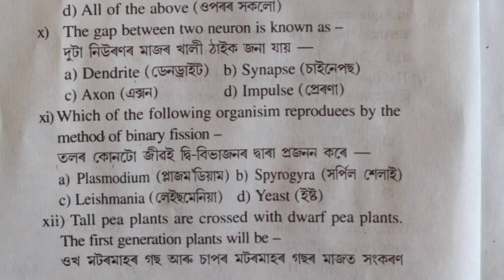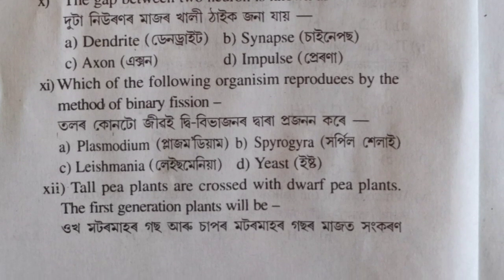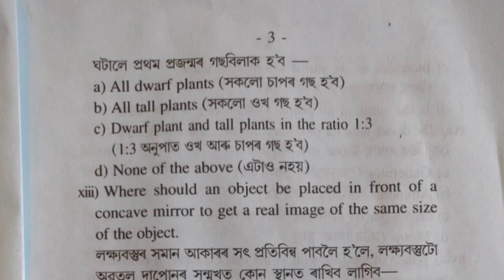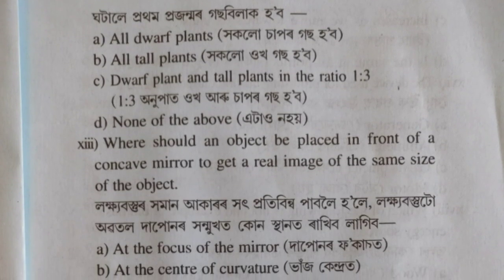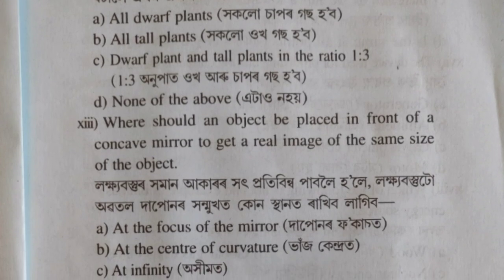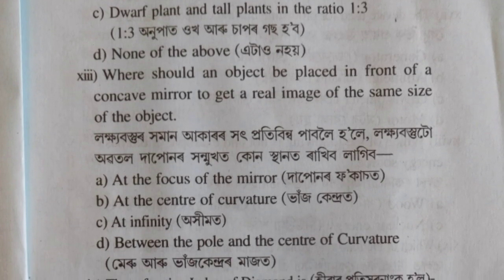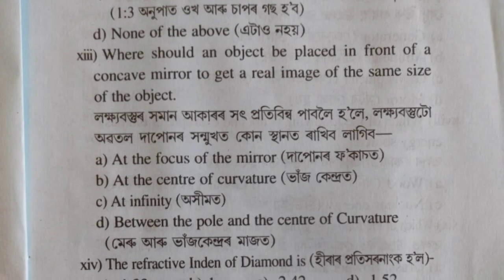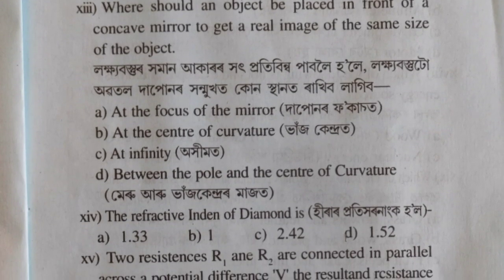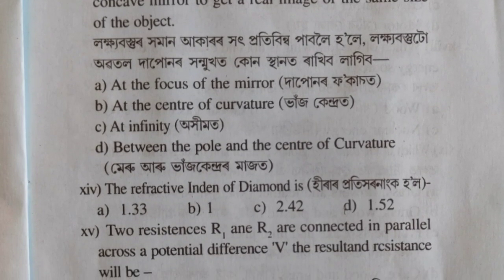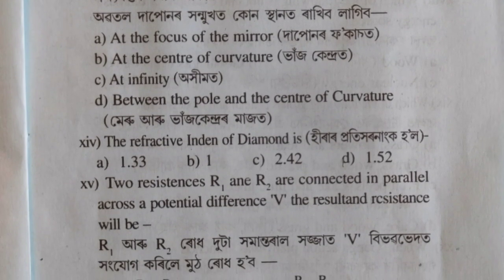Question: 12P plants are crossed with 12P plants — the first generation plant will be determined by Mendelian genetics. Where should an object be placed in front of a concave mirror to get a real image of the same size as the object? The correct option is B, at the centre of curvature.